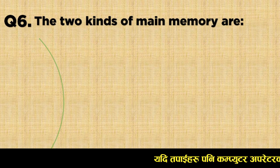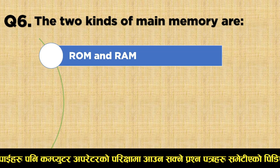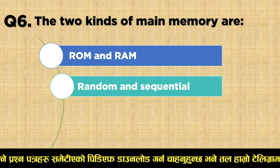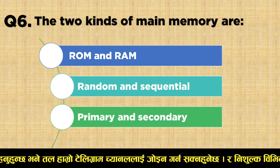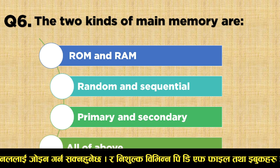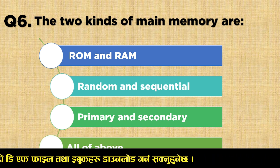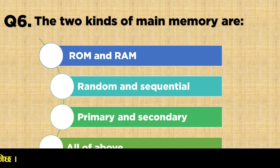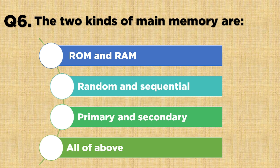Question number six: the two kinds of main memory are — Option A: ROM and RAM, Option B: Random and Sequential, Option C: Primary and Secondary, Option D: All of the above. The correct answer is Option A: ROM and RAM.